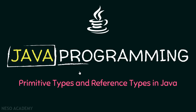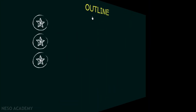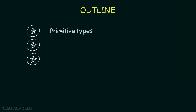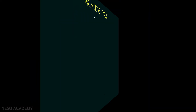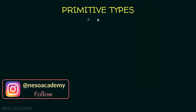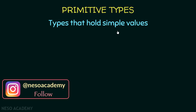Hello friends and welcome back. In this lecture we will talk about primitive types and reference types in Java. Our outline covers primitive types, reference types, and finally the difference between primitive types and reference types. So let's get started. What are primitive types? They are the types that hold simple values.